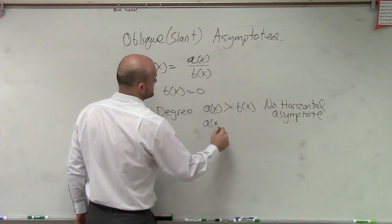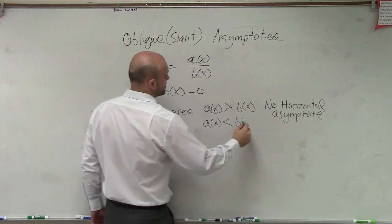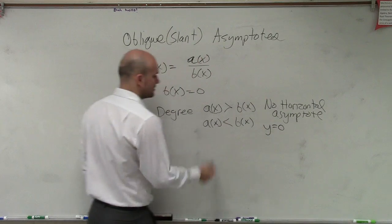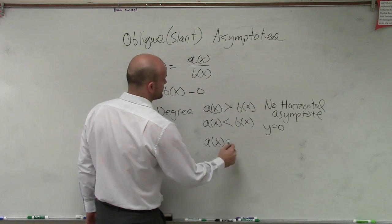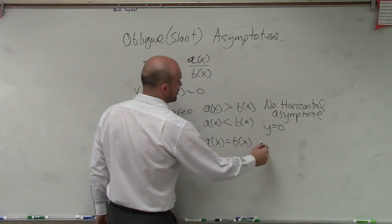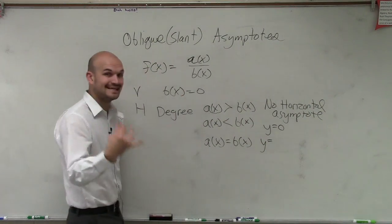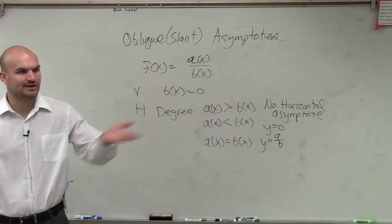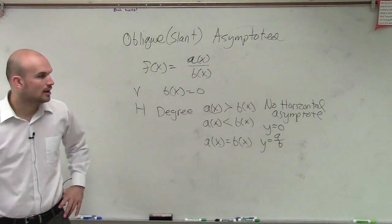When we said a of x was less than b of x, then we said the asymptote was y equals 0. And when we said when a of x was equal to b of x, we had an asymptote of your leading coefficients of a over b. Quick little review.